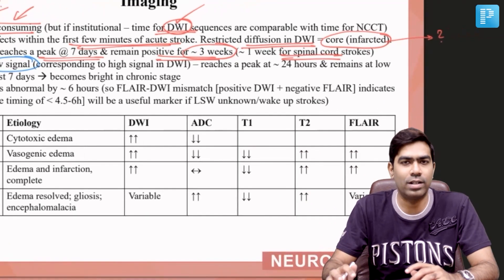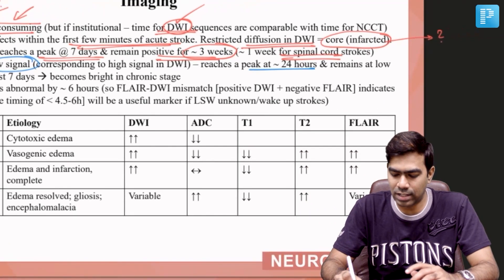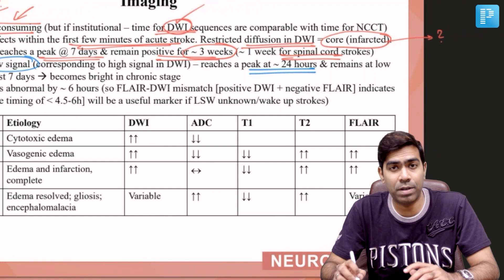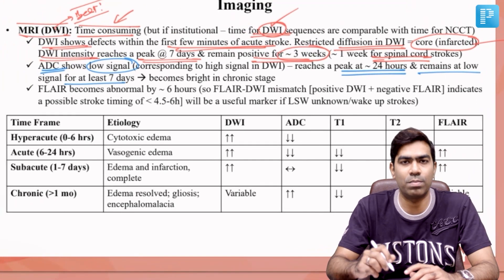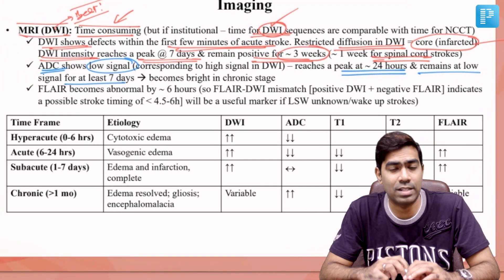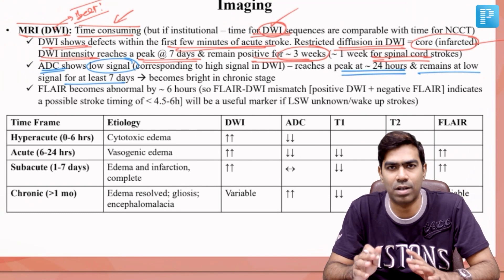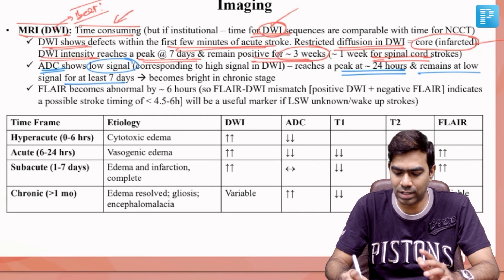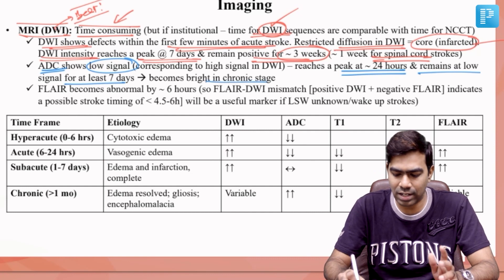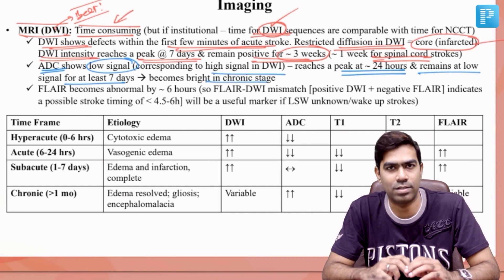The low signal in ADC reaches a peak by approximately 24 hours and continues to remain positive for at least 7 days. Around the 7 to 8-day mark, there can be pseudo-normalization. After that, the signal starts steadily increasing and becomes bright in the chronic stage.